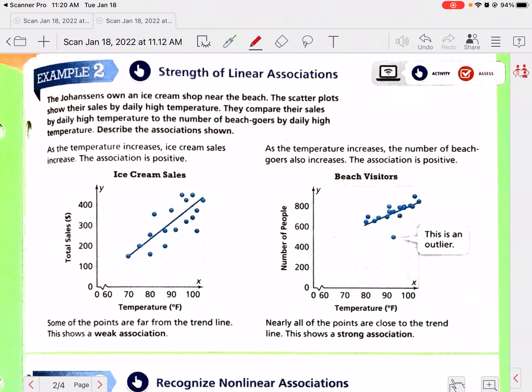Now the Johnsons own an ice cream shop near the beach. The scatter plots show their sales by daily high temperature. They compare their sales by daily high temperature to the number of beach goers by daily high temperature. Describe the association. We have temperature and total sales, and then we have temperature and number of people at the beach. They've already given us a trend line or line of best fit.